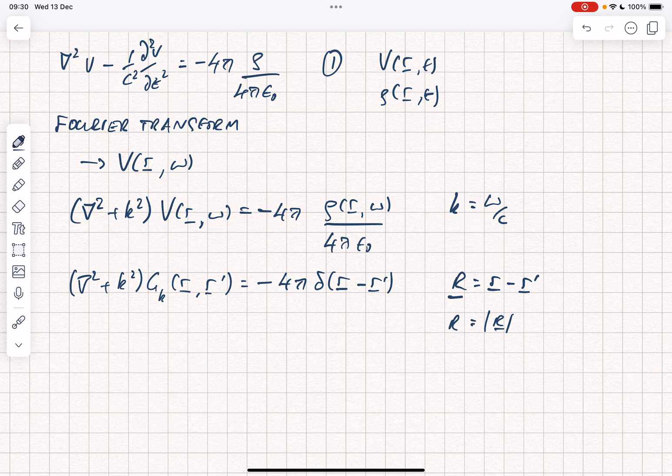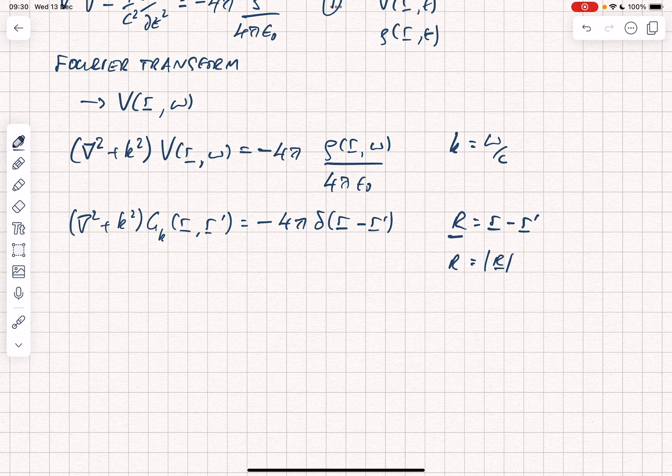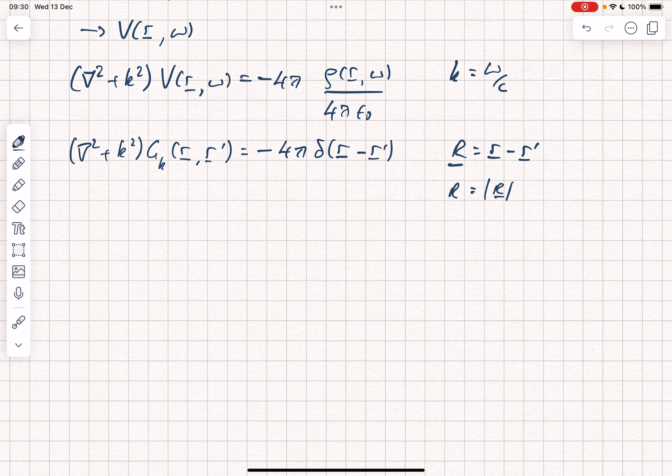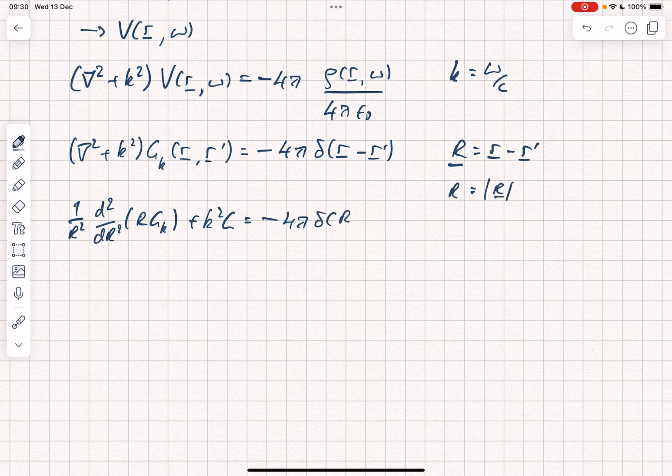Since we have a point source at the origin, in the solution for that Green's function, we know that it must be spherically symmetric and can only depend on the radial function. So we can rewrite the del squared operator, and we get 1 over r squared d2 by dr squared into r gk plus k squared g equals minus 4 pi delta of r.